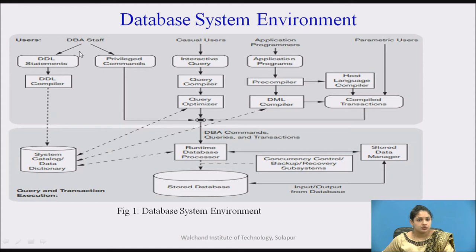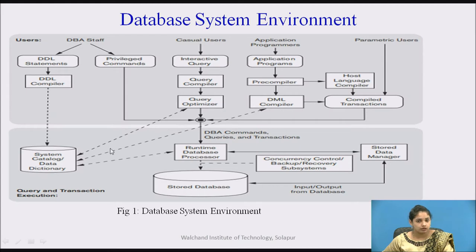The DBMS staff uses DDL statements and privilege commands. Casual users use interactive queries to interact with the database. Application users have application programs and parametric users have canned transactions. In the lowest part there is a stored database — data may be stored on disk or in the cloud. There is also a database catalog, or data dictionary, where metadata is stored.